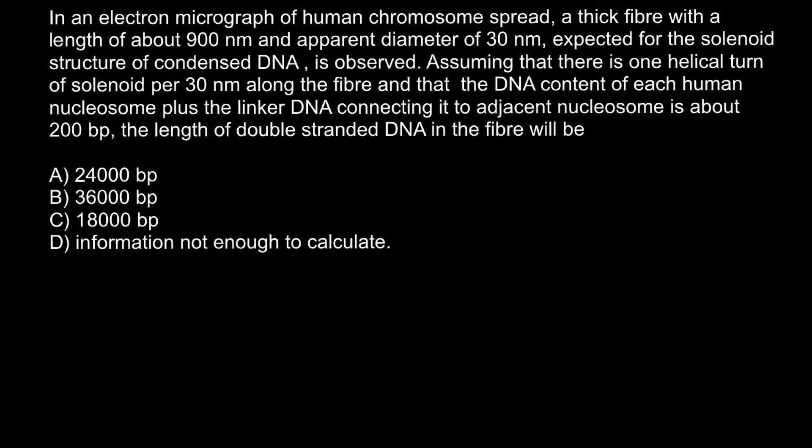In an electron micrograph of human chromosome spread, a thick fiber with a length of about 900 nanometers and apparent diameter of 30 nanometers, expected for the solenoid structure of condensed DNA, is observed. Assuming that there is one helical turn of solenoid per 30 nanometers along the fiber, and that the DNA content of each human nucleosome plus the linker DNA connecting it to adjacent nucleosomes is about 200 base pairs, the length of the double-stranded DNA in the fiber would be—and you have to choose the correct answer.